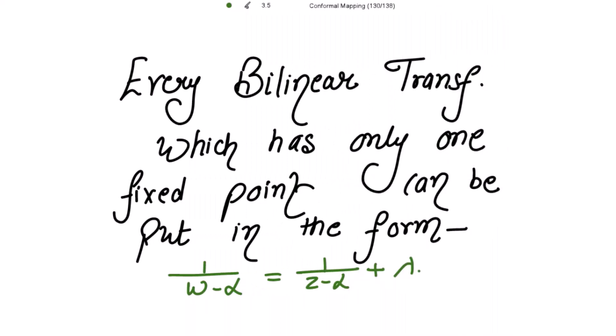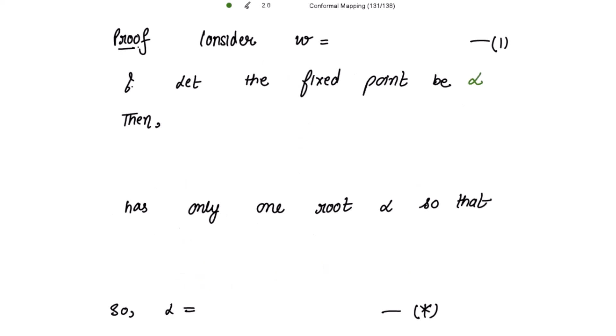The theorem is: every bilinear transformation which has only one fixed point can be put in the form 1/(w - α) = 1/(z - α) + λ, where α is the fixed point. So let's start with the proof. Consider the transformation w = (az + b)/(cz + d) and let the fixed point be α.